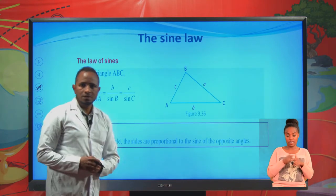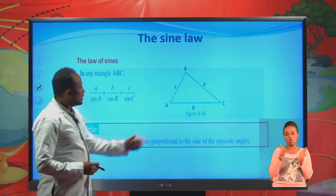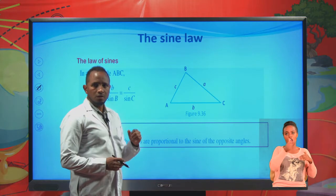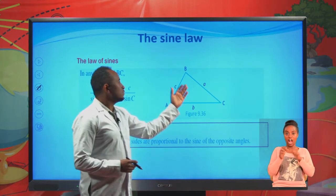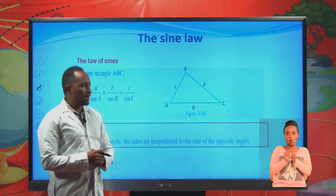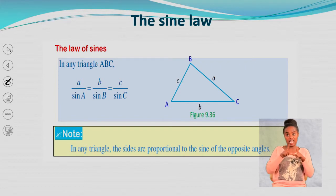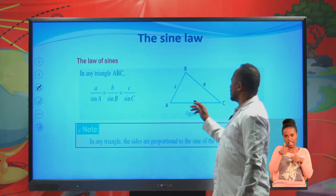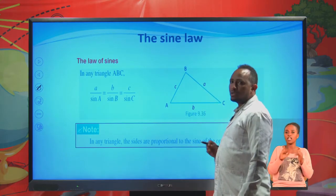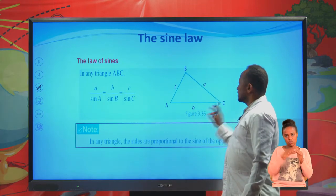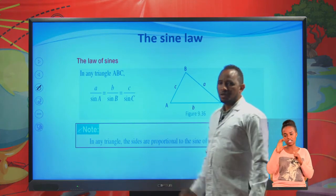The first topic is sine law. If we have a triangle with sides A, B, and C, we can relate each side with its corresponding angle. The value of side A divided by sine A must equal B divided by sine B, which equals C divided by sine C. This is the sine law.